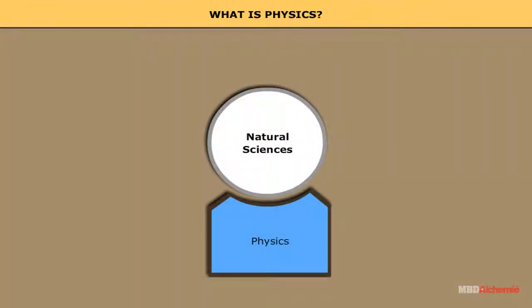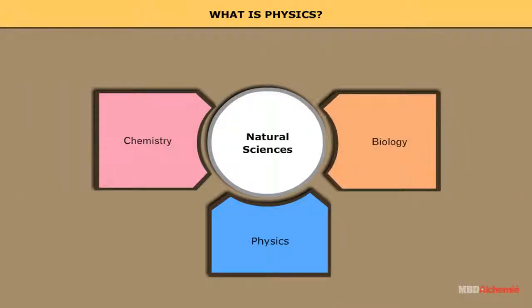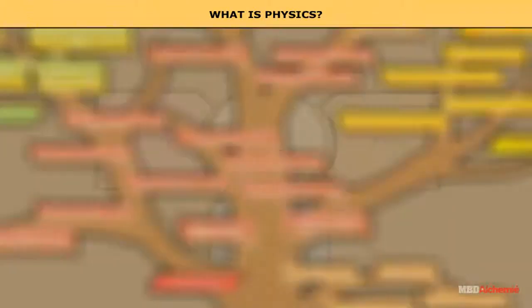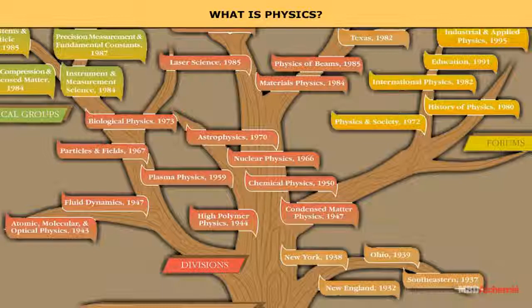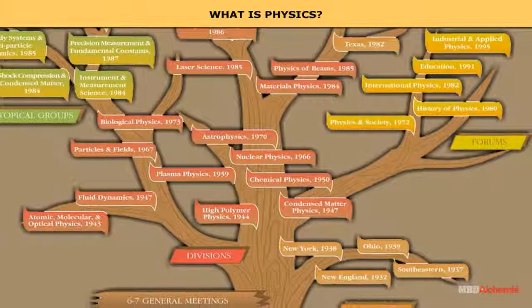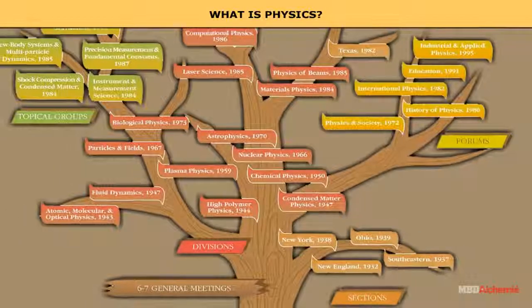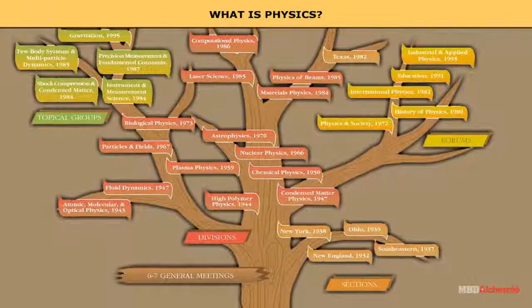Physics is a basic discipline in the category of natural sciences, which also includes other disciplines like chemistry and biology. Basically, physics is the subject or branch of science devoted to the study of nature and all natural phenomena, events occurring in daily life. Thus, physics is the most basic of all sciences.